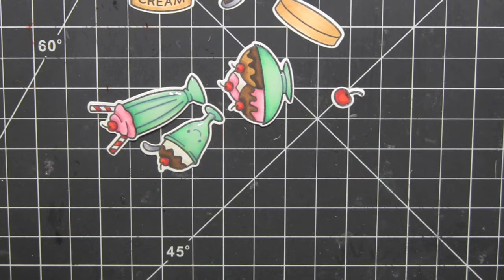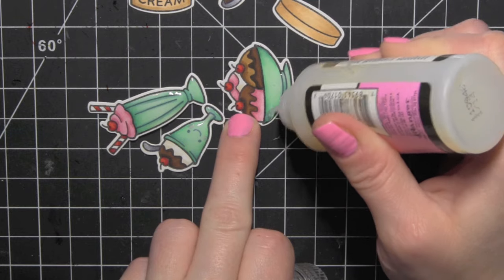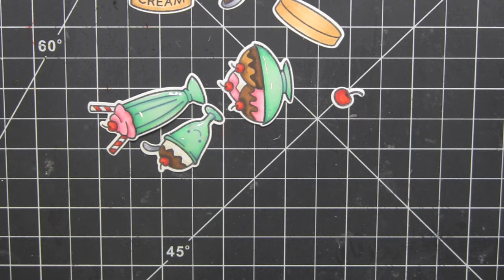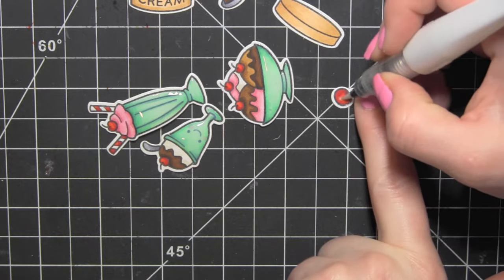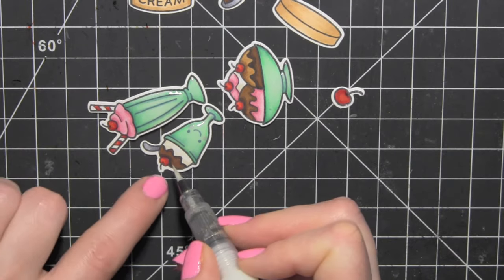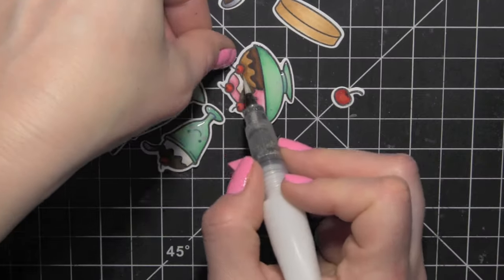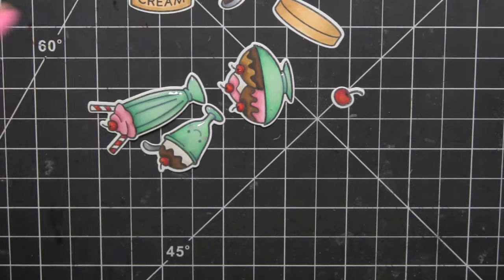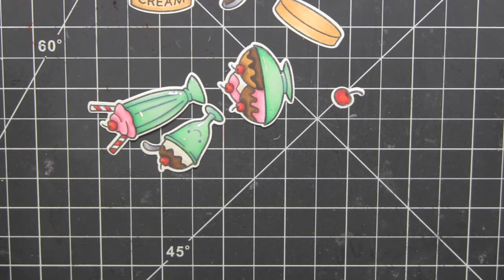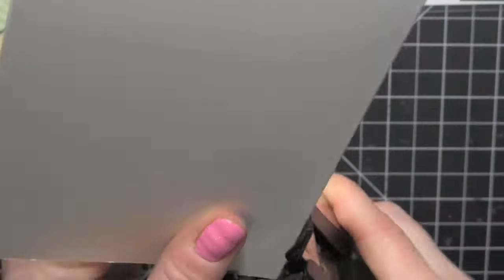I am going to take the Wink of Stella clear glitter pen and color over the cherries on all of the designs to give them a little bit of glitz and glimmer. And I did this before the glossy accents was dried and then I walked away for a little bit and came back to the project once that glossy accents was completely dry.